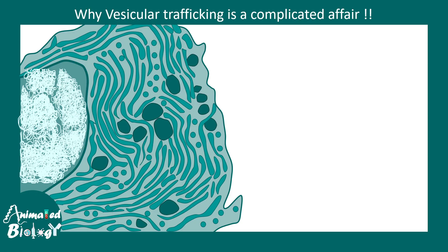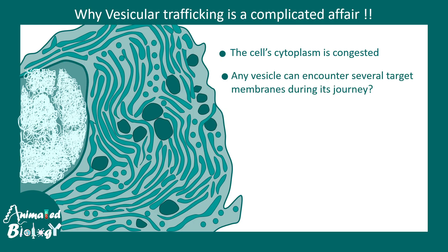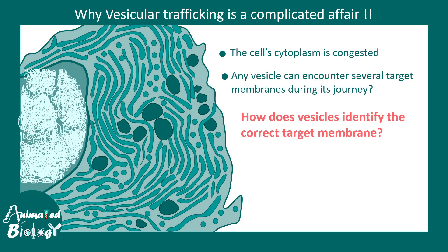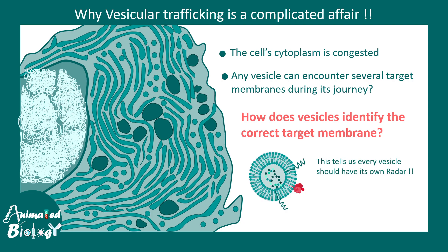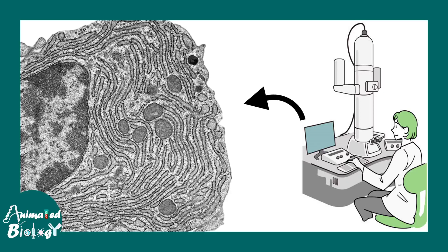This is how the internal part of the cell looks. The original image shows how crowded the internal environment of a cell is — multiple vesicles interspersed between the endoplasmic reticulum, Golgi, and other organelles. It is literally impossible for a vesicle to know where to fuse. A vesicle can encounter different types of membranes during its journey. How does a vesicle identify the correct membrane to dock? RAB helps in this process — as if each vesicle has its own radar system and RAB is acting like that radar.